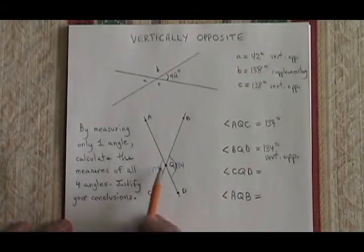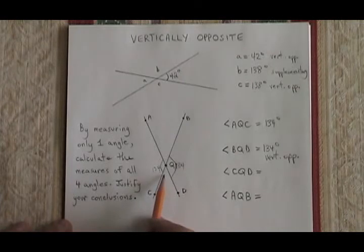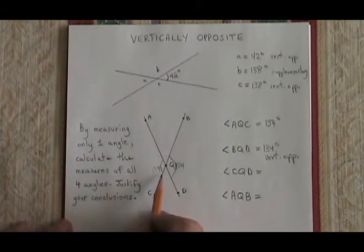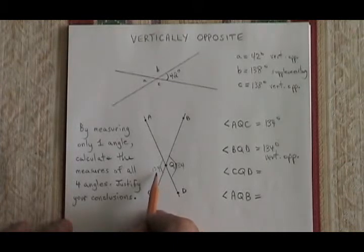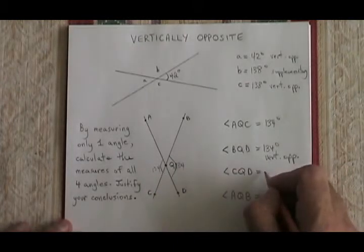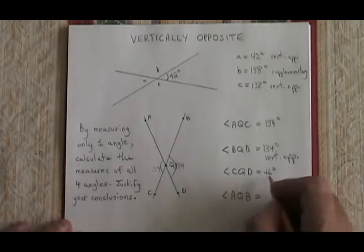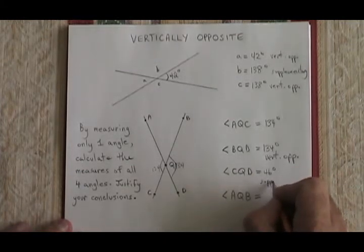Angle CQD is here. And it must be supplementary to angle AQC. They add up to 180 degrees. 180 minus 134 is equal to 46 degrees. So I have found the measure of angle CQD and I use the word supplementary to justify it.